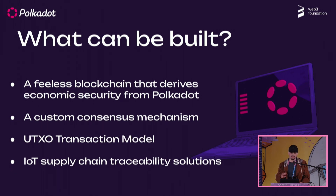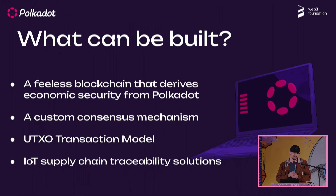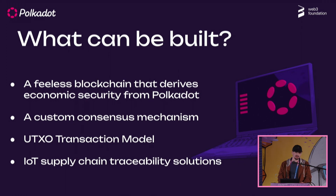You can build a feeless blockchain if you want — there are specific macros and ways to configure fees in your chain, or you don't want fees at all and instead use economic security from Polkadot with DOT as your method of paying fees. You can implement a completely custom consensus mechanism with very fast finality using Substrate. You can replace the accounts model with the UTXO transaction model like Bitcoin, or tailor purely the business logic portion of a chain for something like an IoT supply chain traceability solution as an app chain.